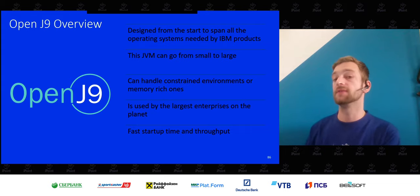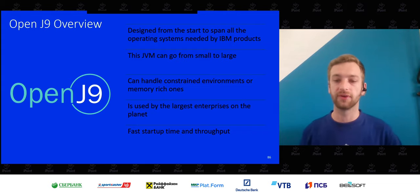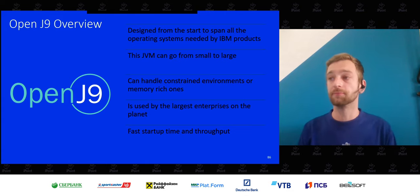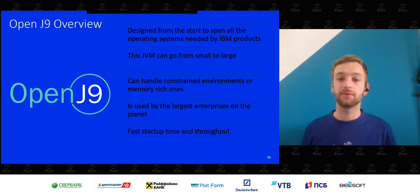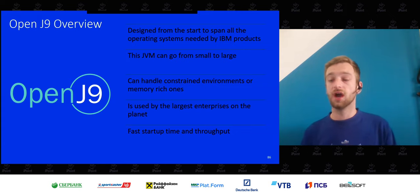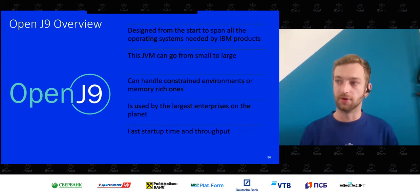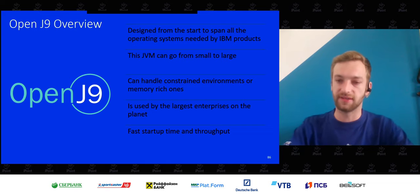Open J9 was originally an IBM JVM that was open-sourced along with Open Liberty — our biggest open source contribution ever at over a million lines of code. It spans all IBM product operating systems and supports pretty much every OS. It scales from very small to very large images, handles both constrained and memory-rich environments, is used by many of the biggest enterprises, and delivers the fast startup time, high throughput, and low memory consumption critical for the cloud.